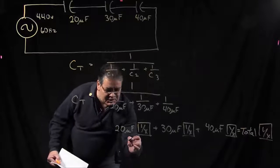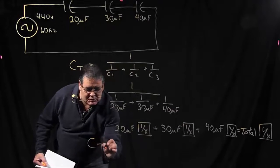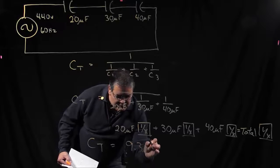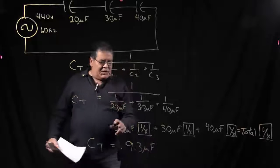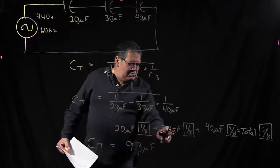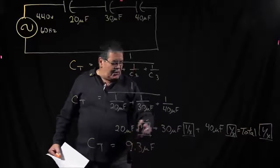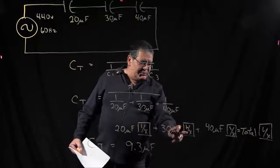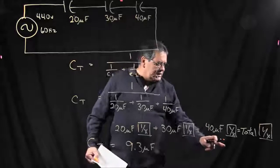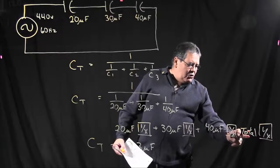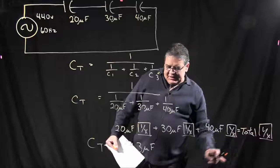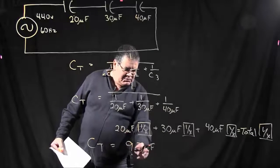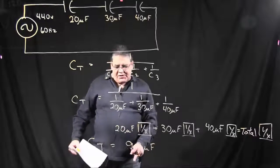And that will give you a total capacitance of 9.3 microfarads. Now when you're plugging this into your calculator, just ignore your micro, because that's going to follow through. So you just hit 20 reciprocal, plus 30 reciprocal, plus 40 reciprocal. Once you get your total, hit your equal sign, then hit your reciprocal again, and you will come up with 9.3 on your calculator. Then all you've got to do is carry your units down of micro and farads, which is your capacitance.